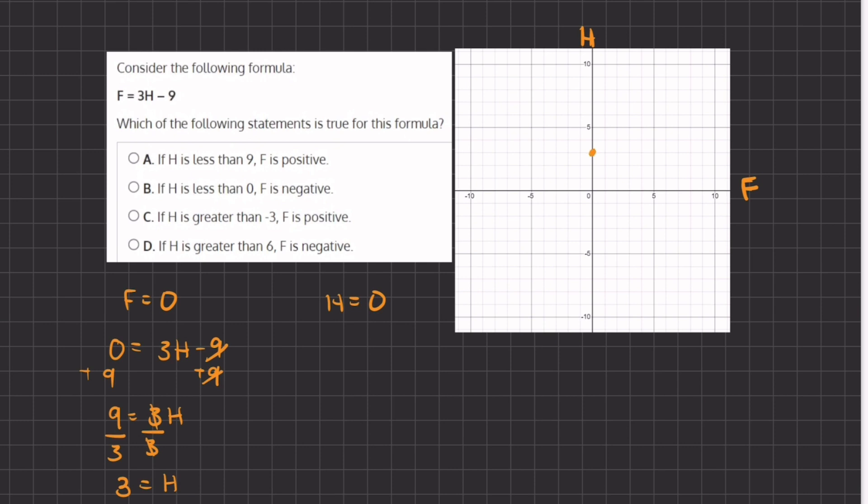Now when h equals zero, let's plug that in, we have f equals three times zero minus nine and three times zero gives us zero, so we have f equals negative nine.